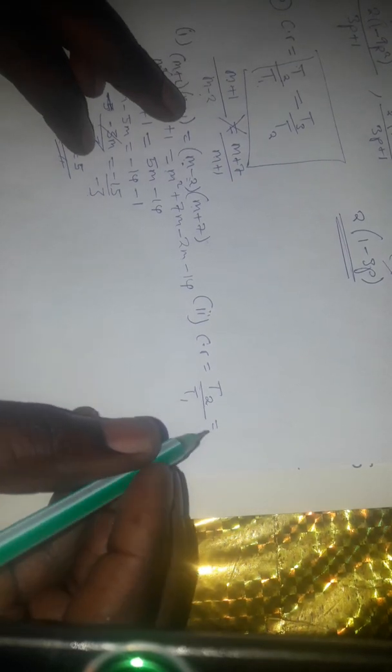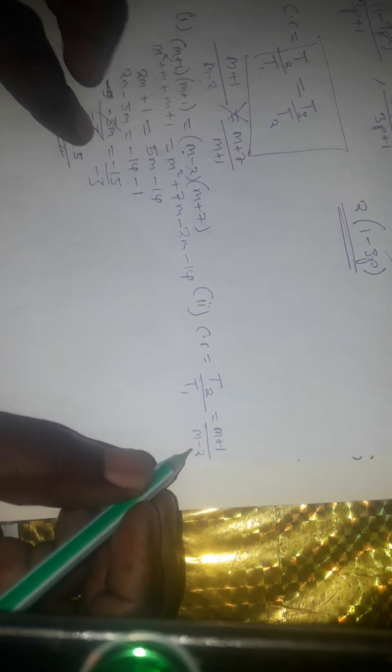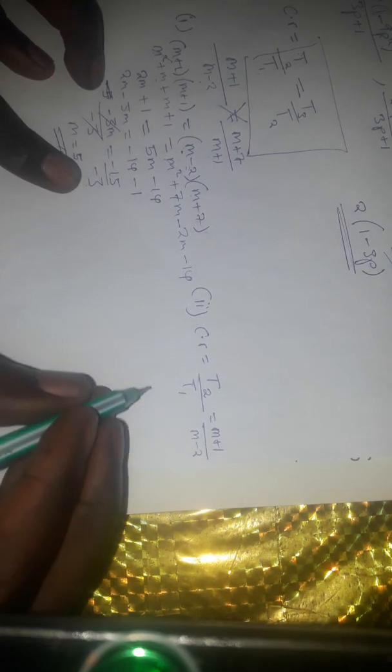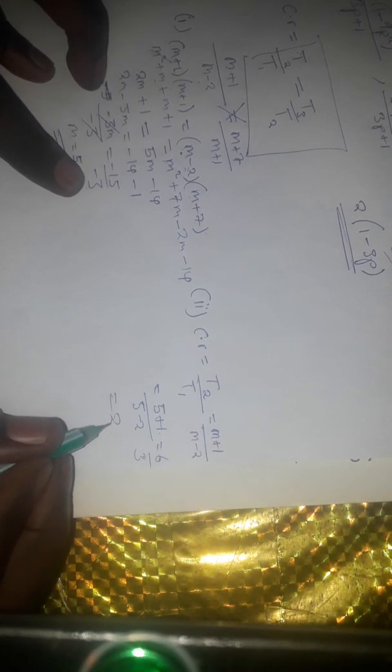So that is the first part of question B — finding the value of m equals 5. Part 2 is asking us to find the common ratio. The common ratio is simply the second term divided by the first term. Our second term is m plus 1 over our first term m minus 2. We substitute m equals 5: 5 plus 1 over 5 minus 2, which simplifies to 6 over 3, which comes to 2.